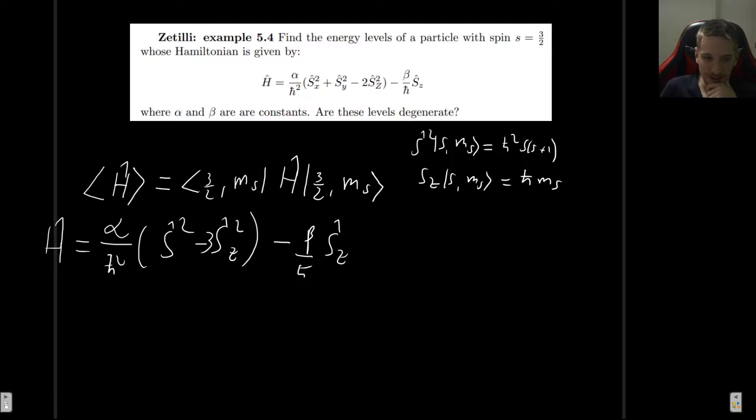So now let's let this Hamiltonian operator act on our state that has an s value of 3/2 and can take several different values for m_s. So when we do that, we have this is acting on 3/2, m_s. Okay, so now let us allow each one of these operators to act on this ket. So first we get, well, I'm going to leave the constants here. So s squared acting on this is going to be 3/2 times 3/2 plus 1,